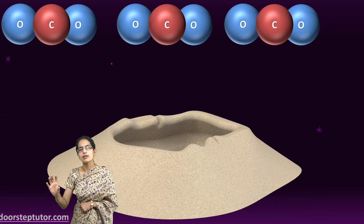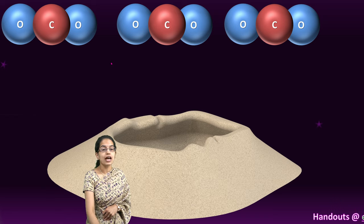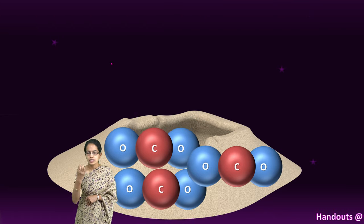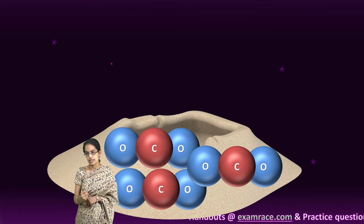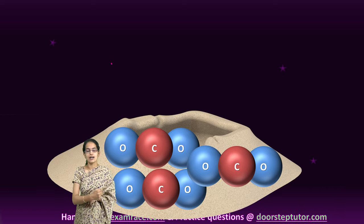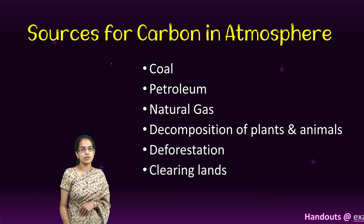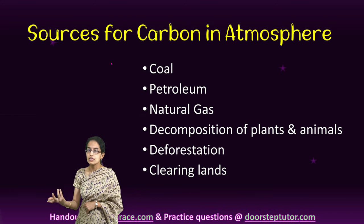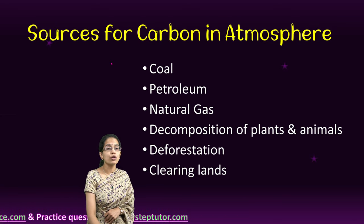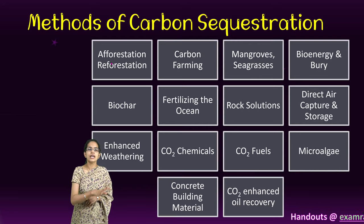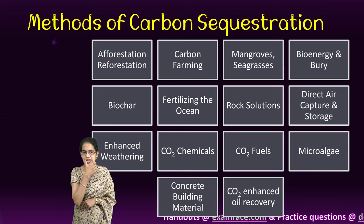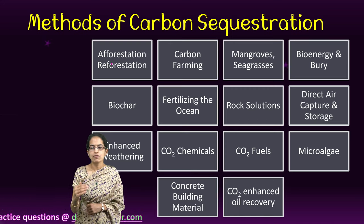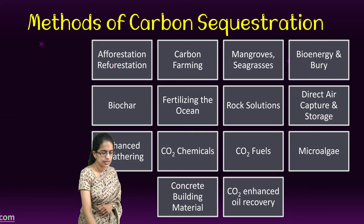What we try to do under carbon sequestration is a simple process — we try to capture the carbon dioxide molecules present in the atmosphere and trap them. Before we go into the methods, there are numerous sources of carbon: fuels, decomposition of plants and animals, deforestation, industrial exhaust, and urban waste all accentuate the release of carbon dioxide. Here are some of the best methods or remedies for carbon sequestration, which we will focus on one by one.